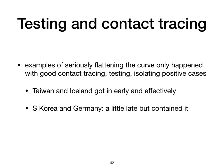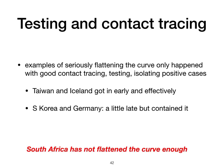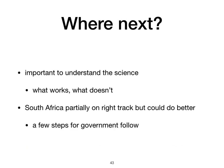The gold standard for flattening the curve is contact tracing, testing, and isolating positive cases. Taiwan and Iceland got it early and effectively. South Korea and Germany were a little late, but also managed to contain it. South Africa has not flattened the curve enough, and that is a concern.